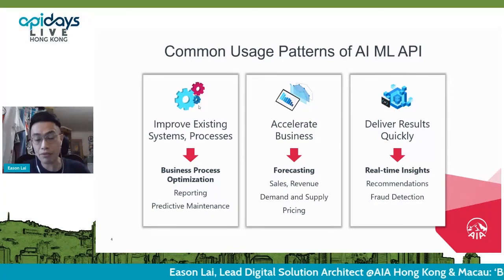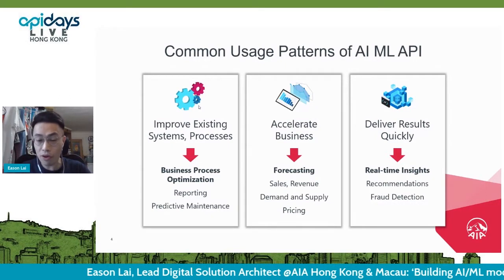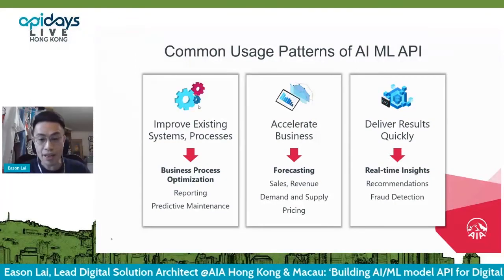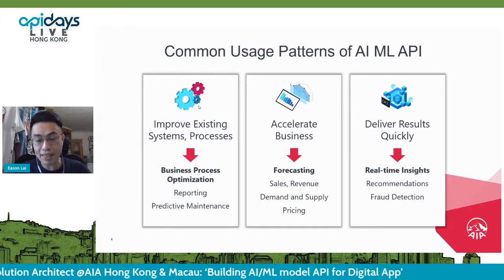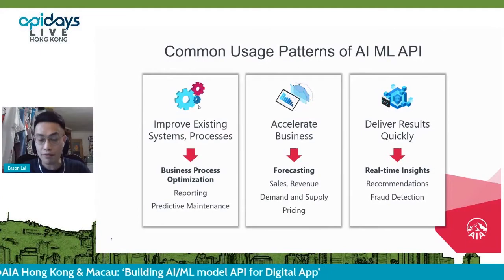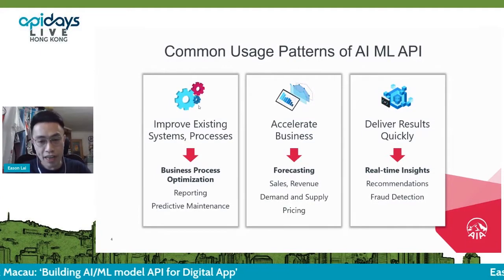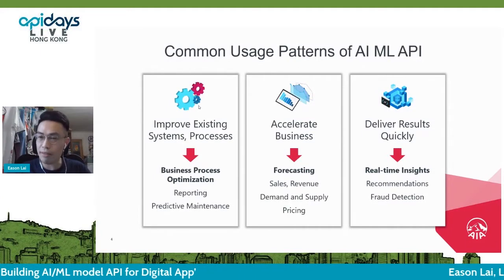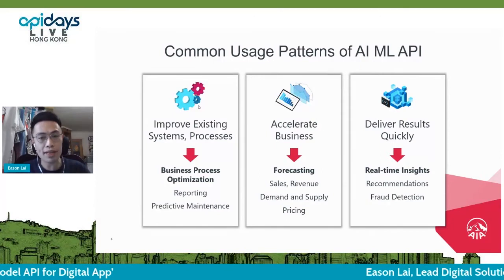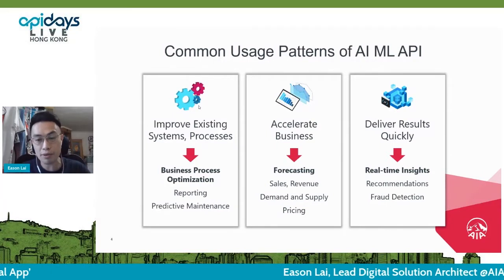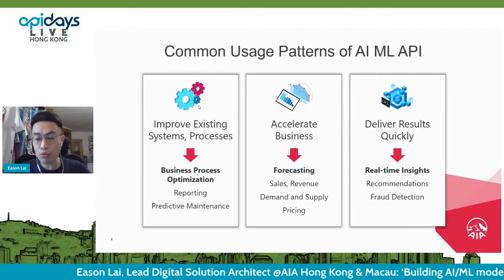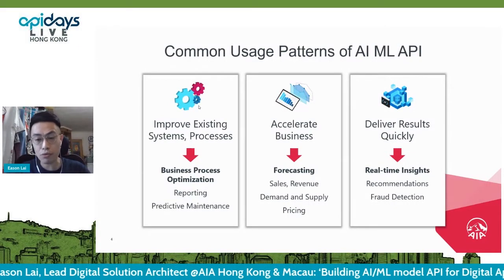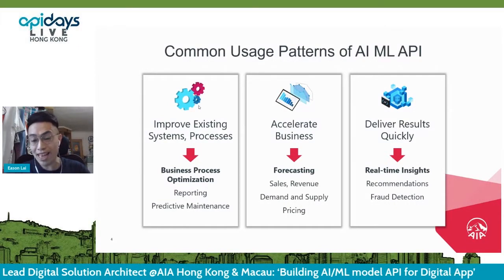The second pillar is to accelerate business — doing things like sales forecasting and revenue forecasting via API. We can also do supply and pricing forecasting. It's straightforward: call the API, pass in arguments, and get a forecast of the next best value to recommend to our customers, agents, or business planners. We can also do real-time analysis for recommendations.